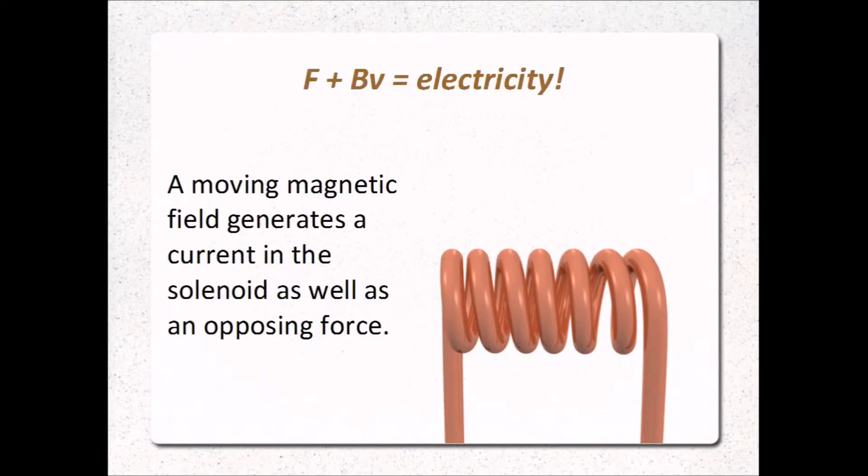Are you wondering where that opposing force comes from? It's because as the magnet moves in or out of the coil, it creates an electrical current in it. Even though the wire you see is not connected to a battery, we can get current to flow through it using nothing more than a moving magnet.